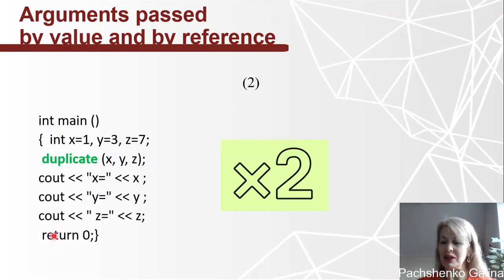Let's consider the second part of our program. This is our function main. And here we declare variable x of type int and assign value that is equal to 1 to our variable x. Here we declare variable y of type int and assign value 3 to our variable y. And here we declare variable z and assign value 7 to our variable z.